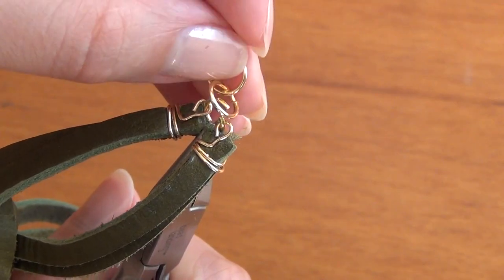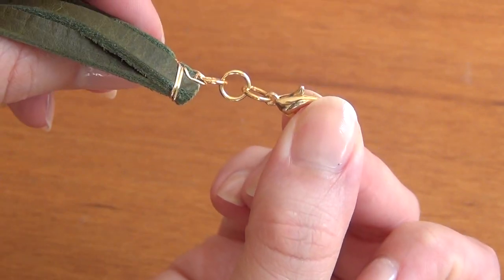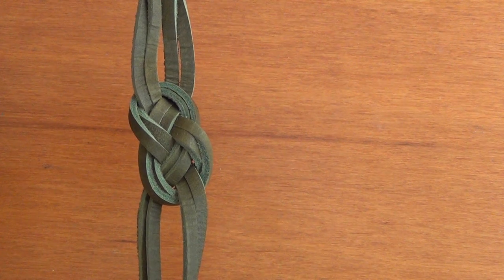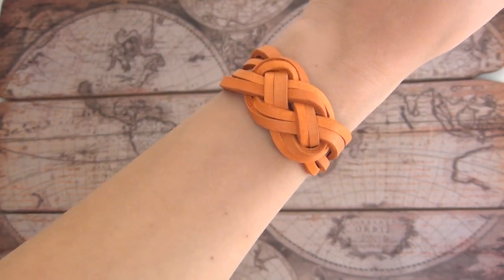And finish that off with your jump rings and your lobster clasp the exact same way you did with your other types of end crimps. And these are the finished products. Thanks for watching! If you enjoyed this video, remember to like, share, and subscribe.